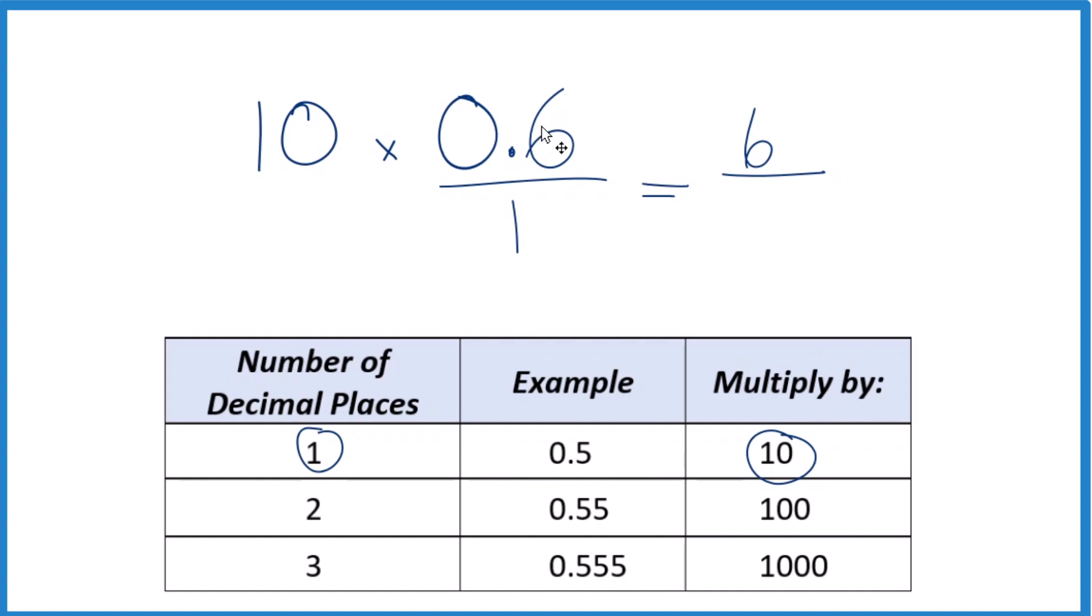But we can't just multiply the numerator by 10. We also need to multiply the denominator by 10. That's because 10 divided by 10 is 1. So we don't change the value, just the way we represent it. We get our fraction. 10 times 1, that's 10. And we end up with 6 tenths.